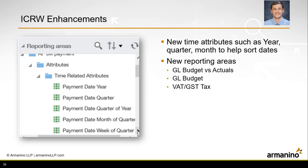The Interactive Custom Report Writer (ICRW) has enhancements including new time attributes — year, quarter, month — added to help sort out dates. Three new reporting areas have been added: first, GL Budget vs. Actuals, which provides budget and GL details including name budget and GL entry header and detailed line item info; second, the GL Budget object providing budget header and detail information; and third, VAT and GST Tax, providing general tax details applied to sales of goods and services.